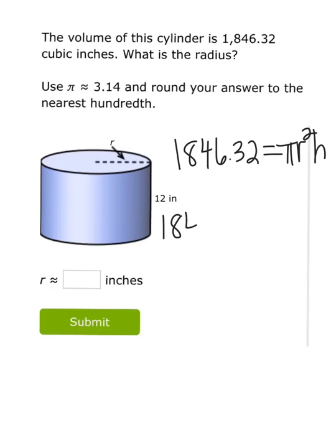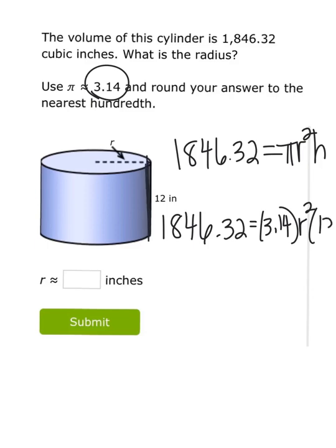We don't know the radius, but we do know that pi, we're going to use 3.14, and I know the height is 12. So let's simplify what we can on that right side of the equation. 3.14 times 12 is 37.68, and then I'm still multiplying that by radius squared.